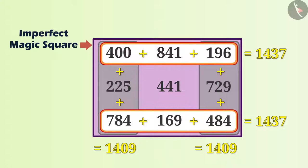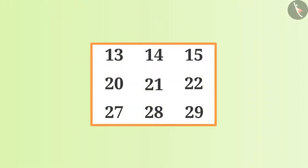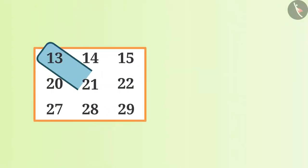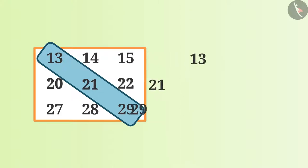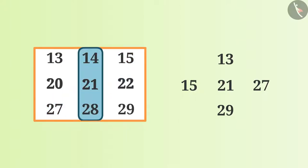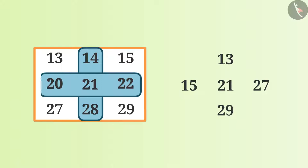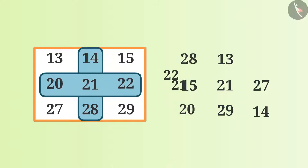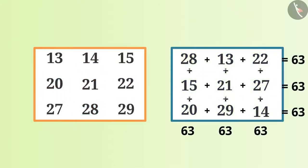Now let me tell you an easy trick to make a magic square. I will take the diagonal cells to the middle column cells and middle row cells. Then I will take the middle column cells and middle row cells to diagonal cells in reverse order. This is how we can get a magic square.